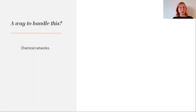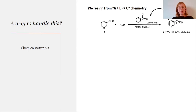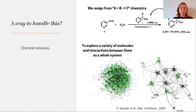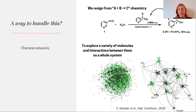In this approach, when we want to use chemical networks for exploration of prebiotic chemistry, we resign from simple A plus B equals C type of chemistry. Instead of that, we try to think about the chemistry taking place in prebiotic systems — like cooking — as a whole. We try to take into consideration a huge number of molecules, a huge number of compounds, and a huge number of interactions between them. That is the basic idea behind chemical networks.